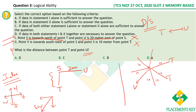Combining both statements: from statement one we know U is 20 meters east of S, and from statement two we know S and T are 10 meters apart with T directly below S (north relationship). Now we can apply the Pythagorean theorem to find the distance between T and U. Both statements together are necessary, so the answer is D, which is option A.